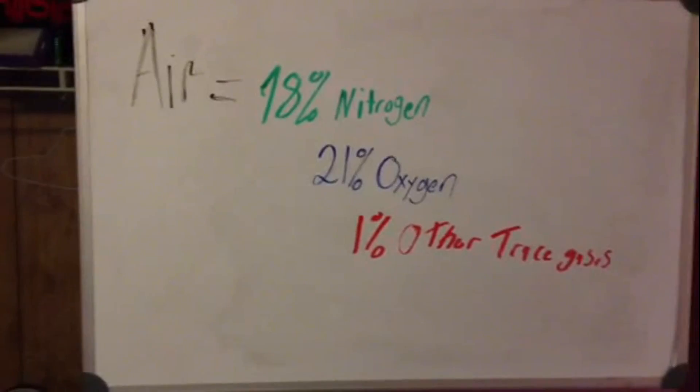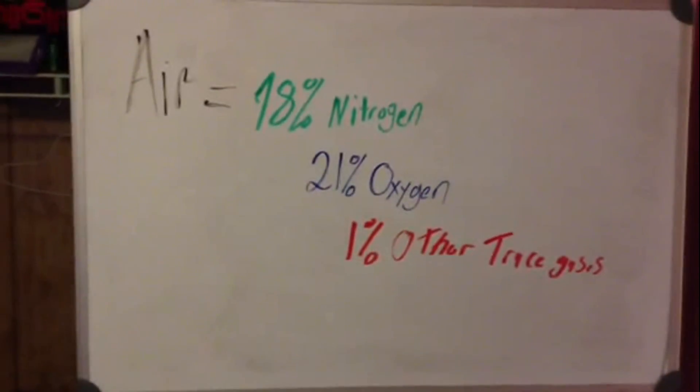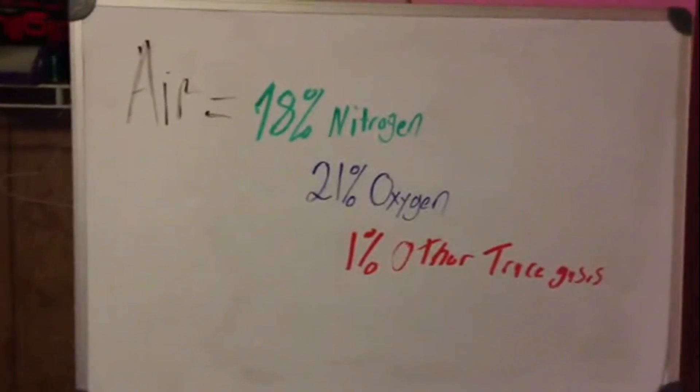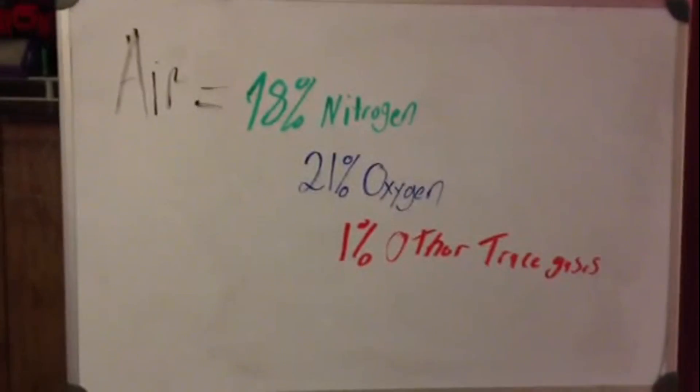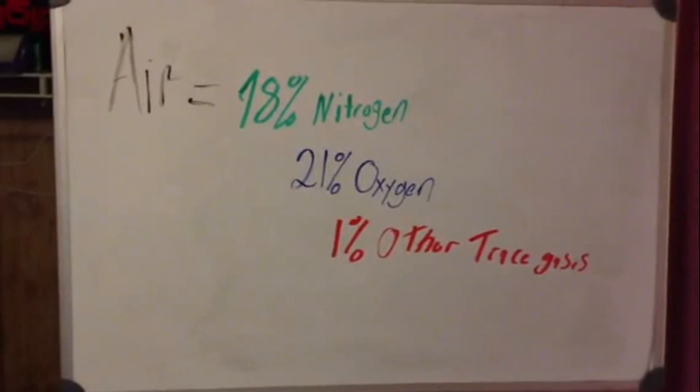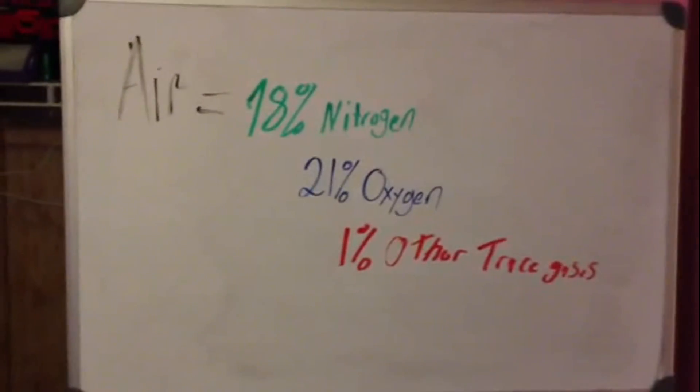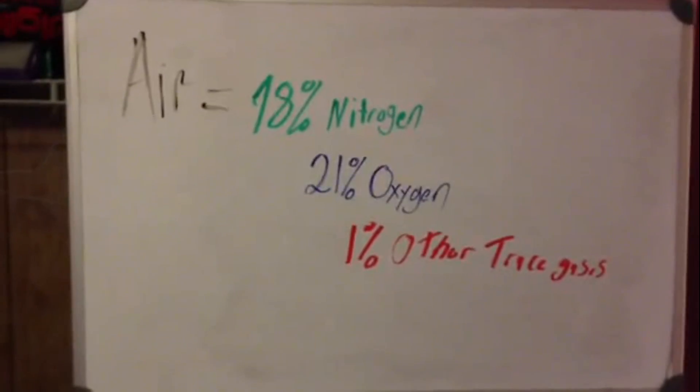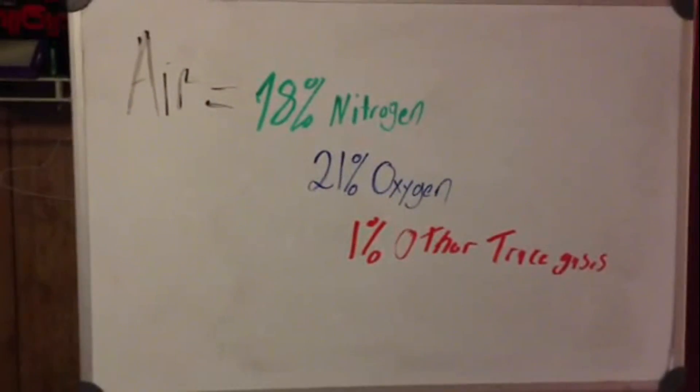But oxygen isn't the only thing that's in our air supply. Our air supply is usually made up of 78% nitrogen, 21% oxygen, and 1% other gases such as boron, carbon dioxide, water vapor, and maybe some other things such as dust.